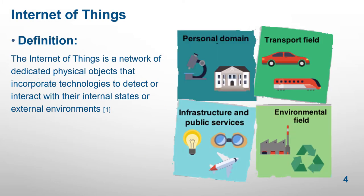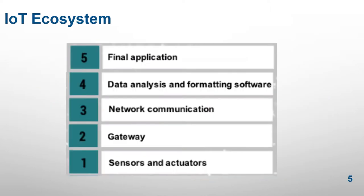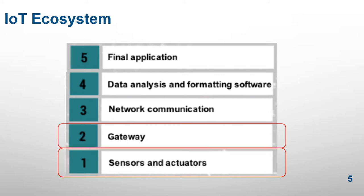We are gradually witnessing a transformation of our technology. An IoT ecosystem includes five essential layers common to all IoT user scales. The first layer is represented by physical objects for gathering data like sensors and actuators. The second one is represented by a gateway that facilitates a connection to the third layer, network communication. Data analysis and formatting software layer is a passage to a fifth layer called final application.